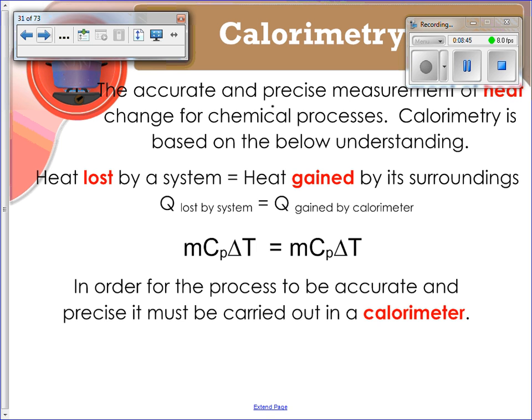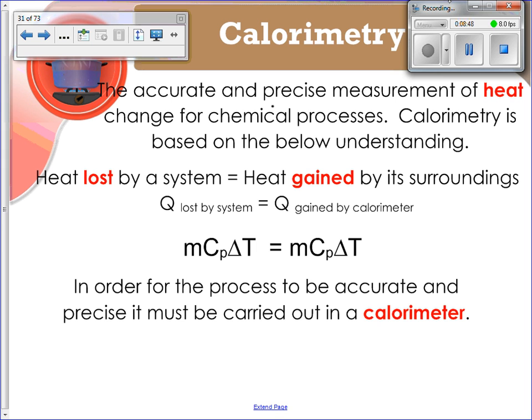Calorimetry, by definition, is the accurate and precise measurement of heat change for chemical processes. Calorimetry is based on the below understanding: if you lose heat, you're a system and you lose heat, it's going to be the same as the heat that's gained by the surroundings. So Q lost by the system is going to equal Q gained by the calorimeter. In this case, your surroundings is your calorimeter. If you have Q equals Q and you know that Q equals mc∆T, you can now say if Q equals Q, that means this mc∆T is equal to the mc∆T for the other Q.